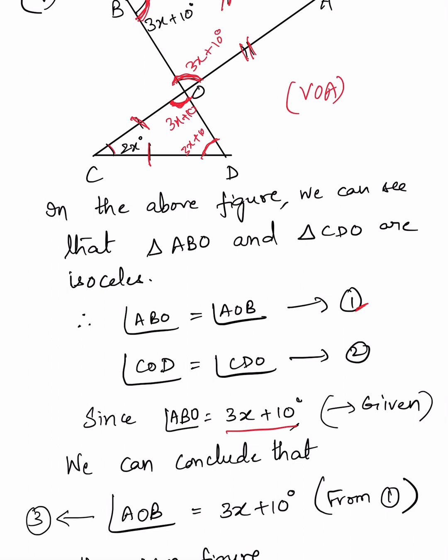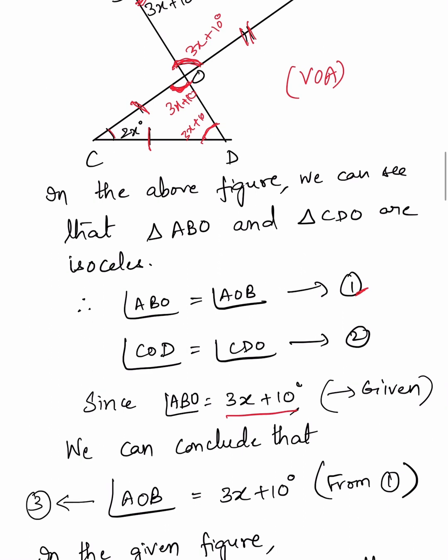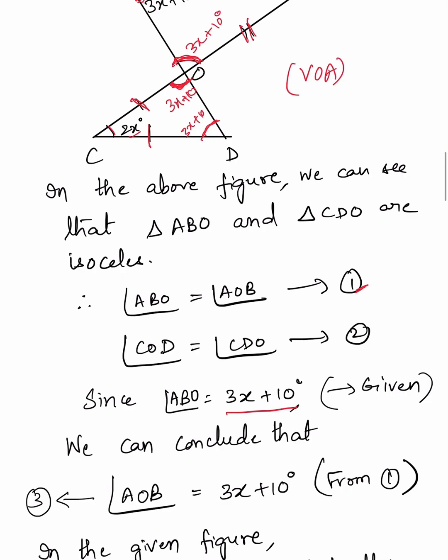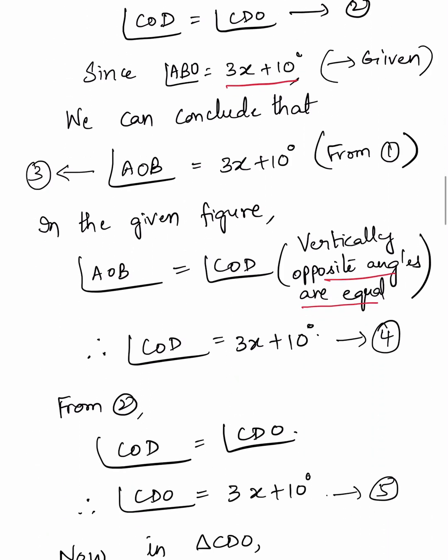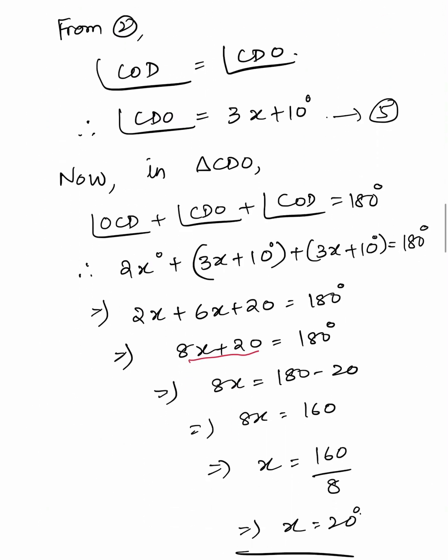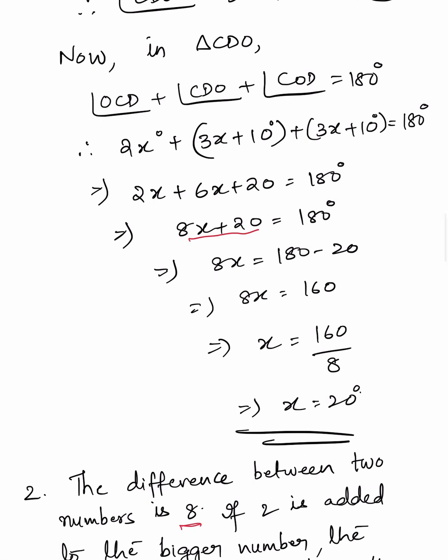Angle AOB and angle COD are vertically opposite angles, so angle COD also equals 3X plus 10. Since angle OCD is 2X and the triangle is isosceles, angle ODC is also 3X plus 10. Applying the angle sum property: 2X plus 3X plus 10 plus 3X plus 10 equals 180, giving 8X plus 20 equals 180, so 8X equals 160 and X equals 20.